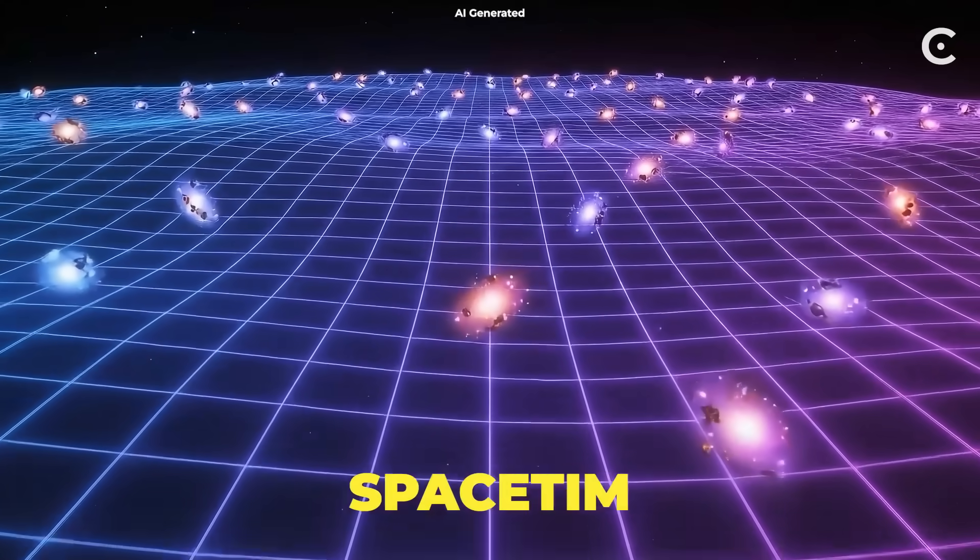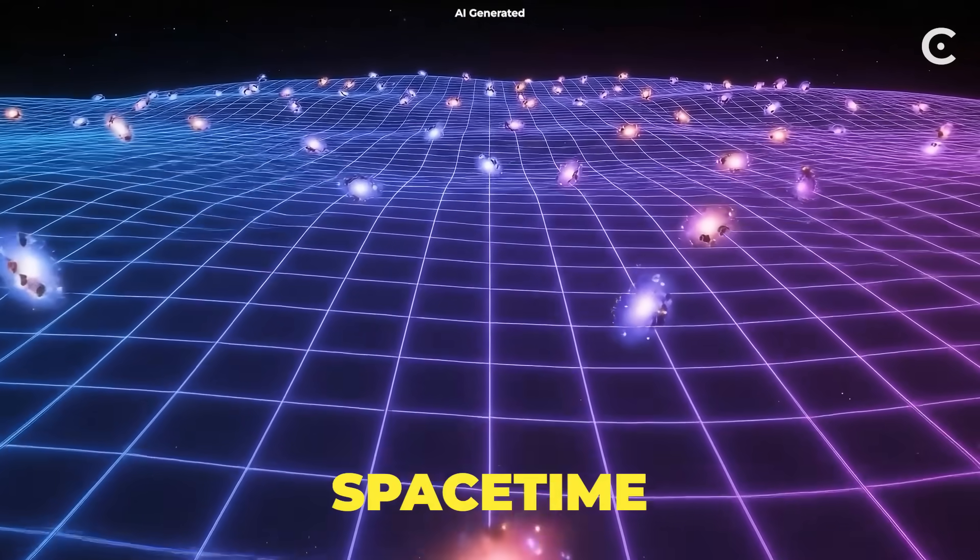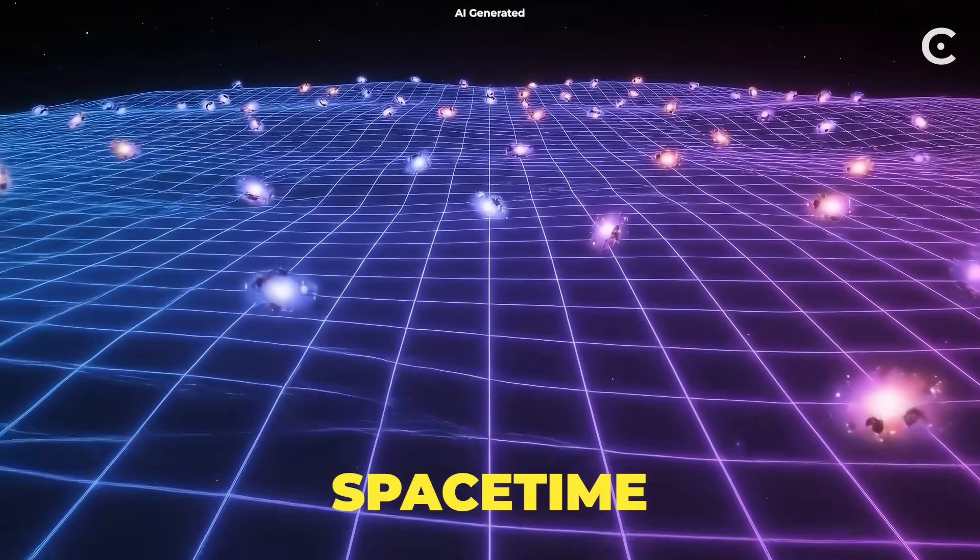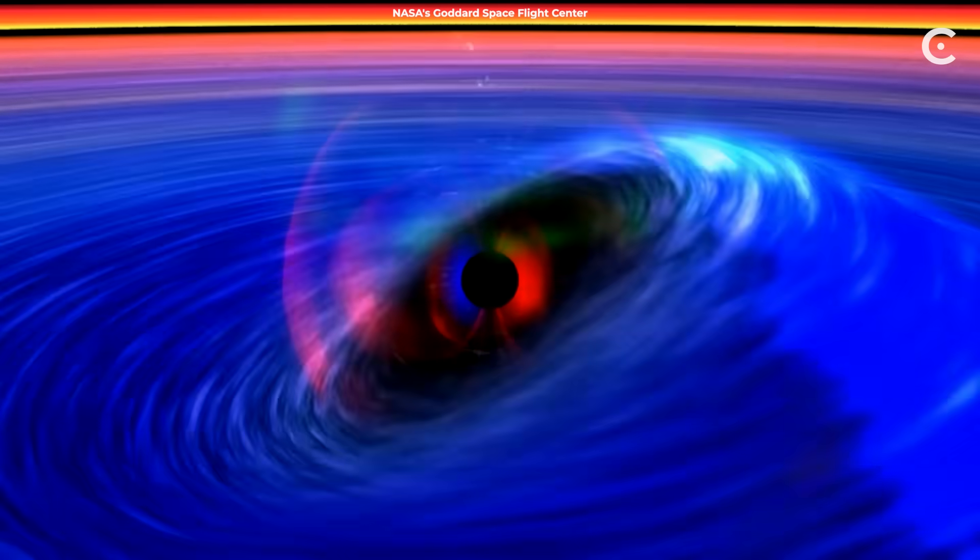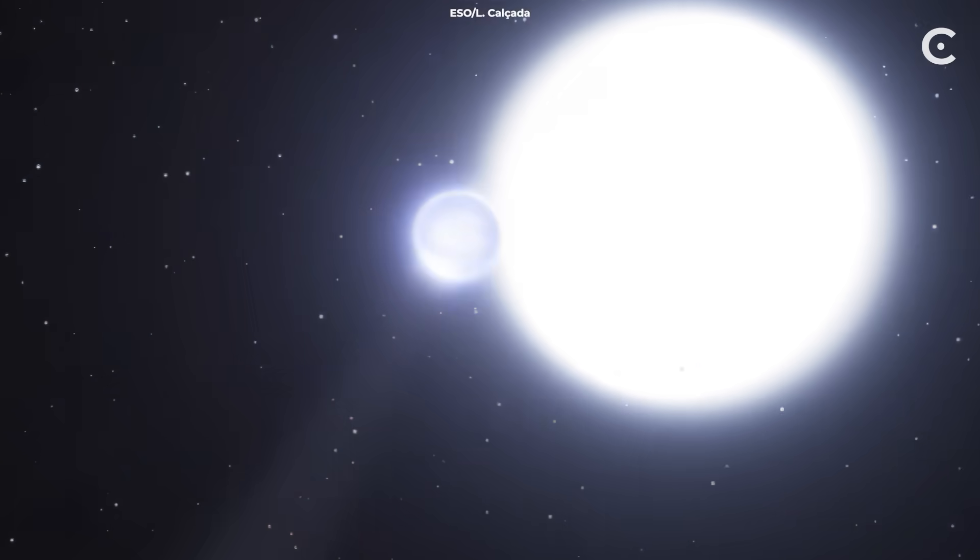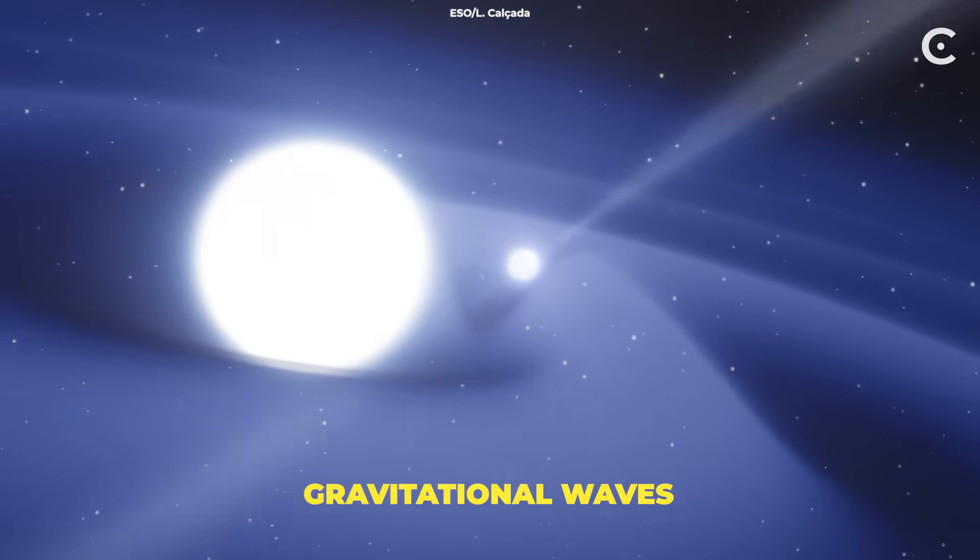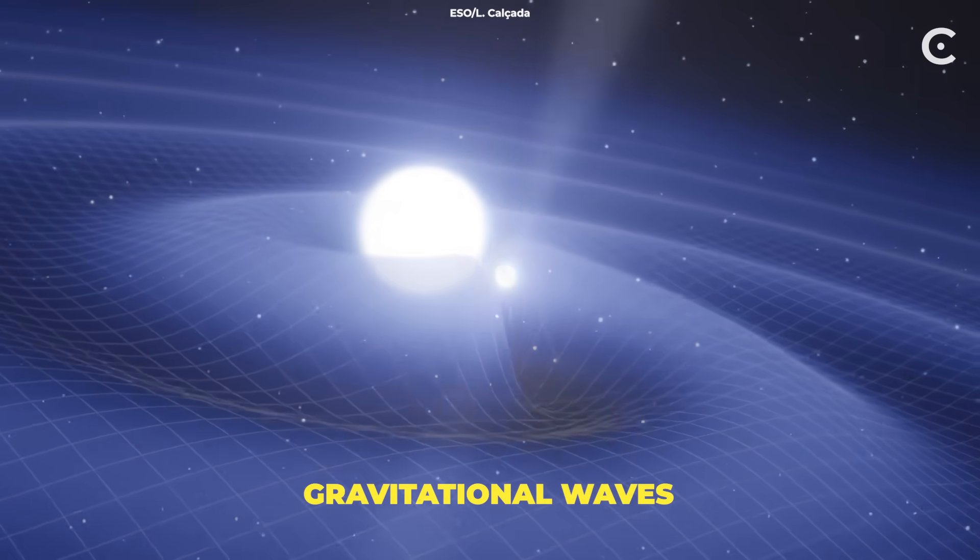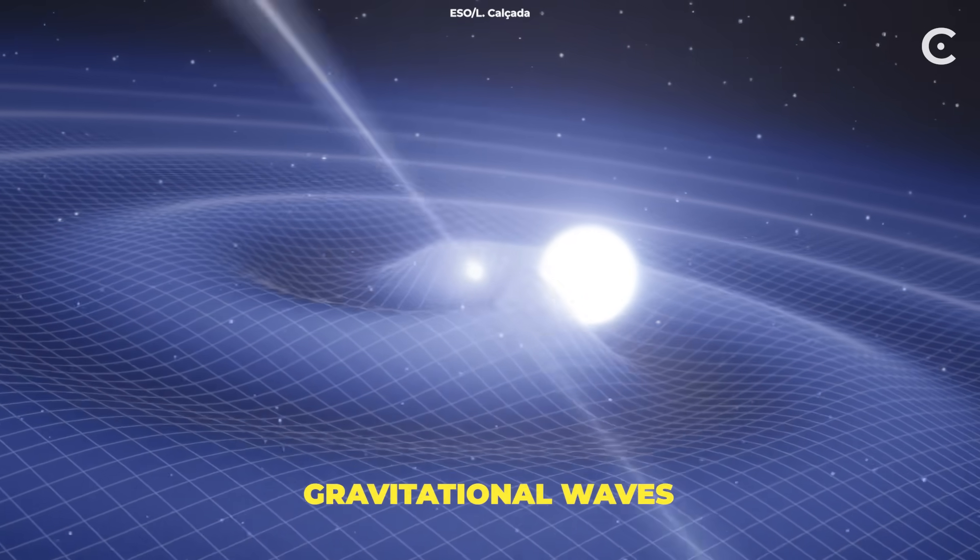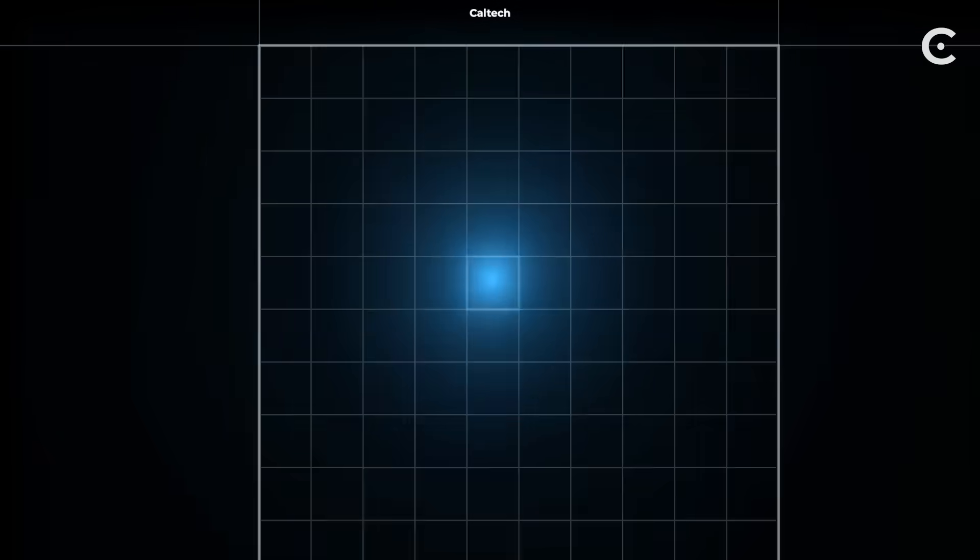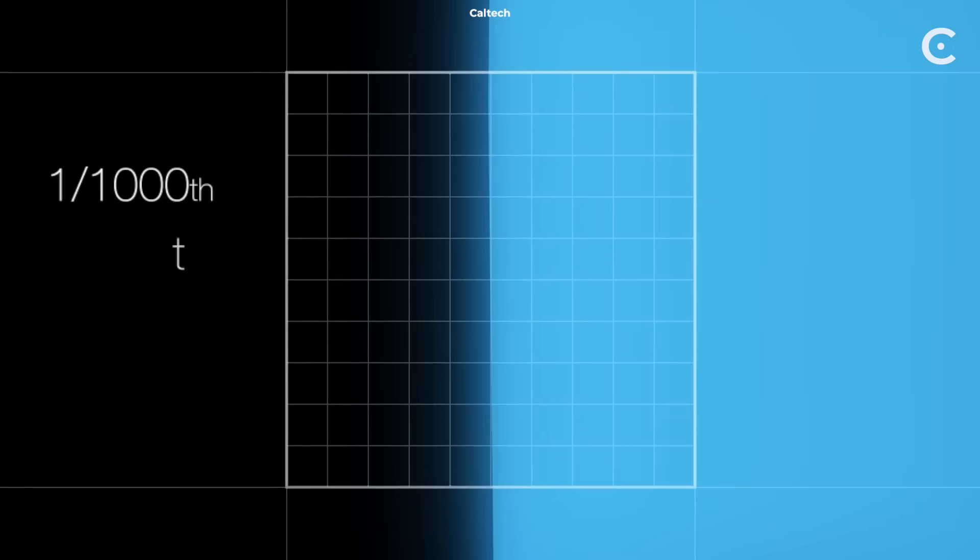This fabric is called space-time, and it's literally the stage where everything in the universe happens. Time and space aren't separate things. They're woven together into one flexible, bendable reality. When massive objects move, they create ripples in this fabric called gravitational waves. We've actually detected these cosmic tsunamis using laser detectors that can measure distortions smaller than a thousandth the width of